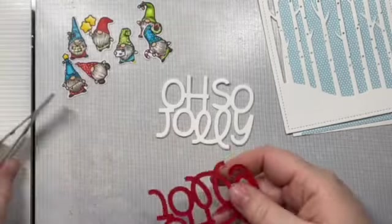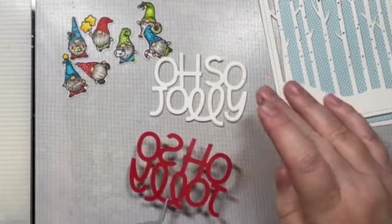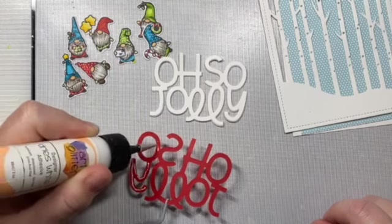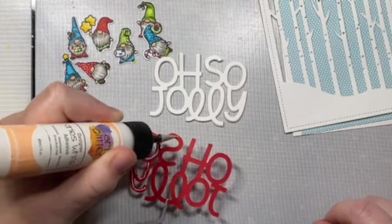So for this first layer, just making sure that they are attached right up and up against each other so that their edges all match. And then for this red layer, I'm just going to apply the adhesive to the back and a very thin line, just right in the center of the sentiment.